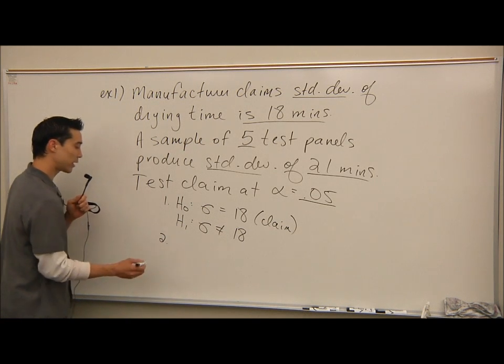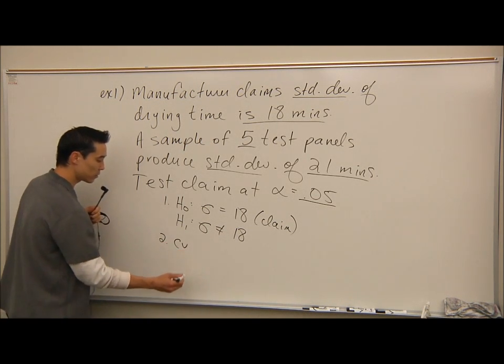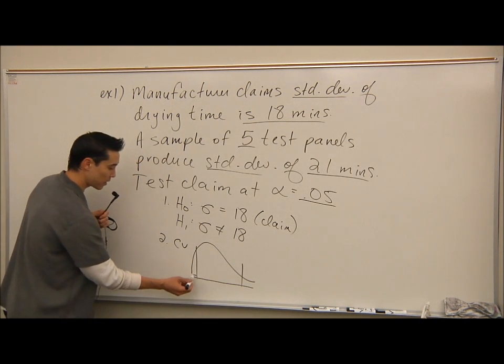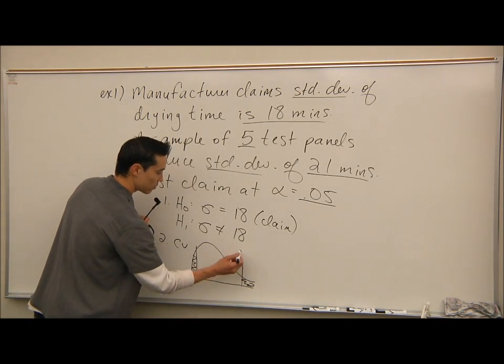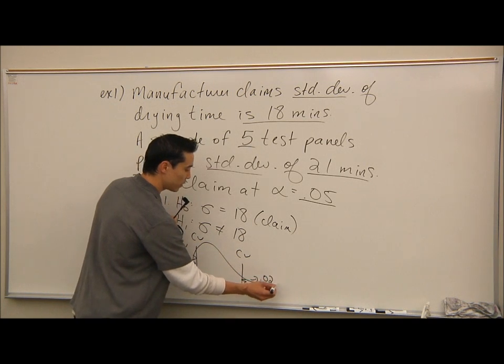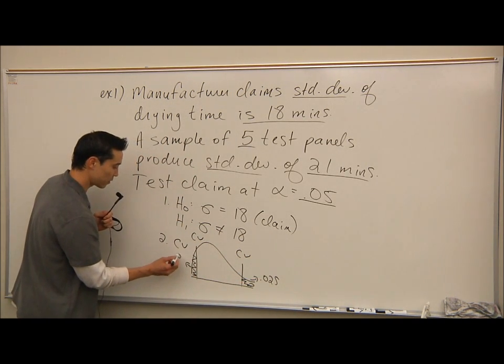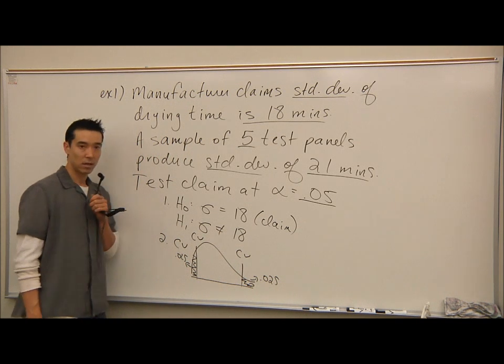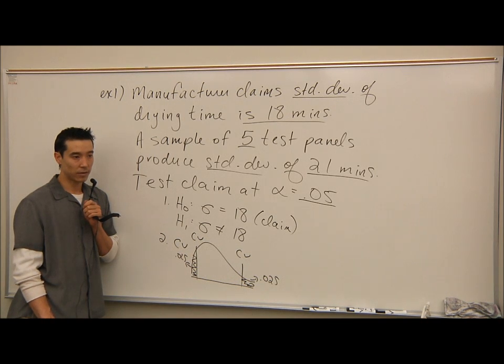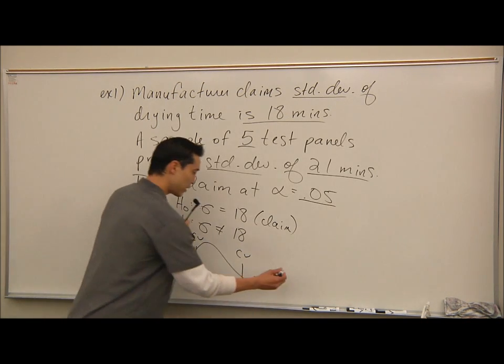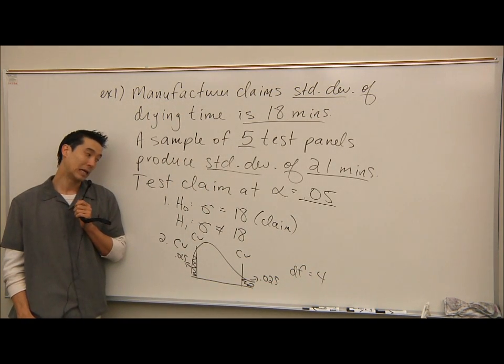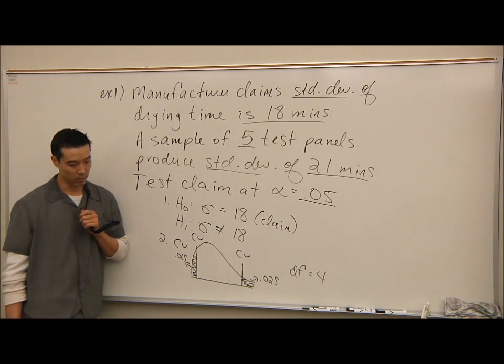So step number two, what I would like you to do is tell me the two critical values. I'll give you a hint, it's the chi-square distribution. Alpha here is 0.05. So we're going to have two critical values. And we're splitting alpha in half, so we have 0.025 here and 0.025 here. So I'll give you a few minutes to tell me what both of those critical values are. n is 5 here, so my degrees of freedom is 4. So I'm trying to tell you everything you need. Degrees of freedom is 4, chi-square distribution. You have a right critical value and you have a left critical value.